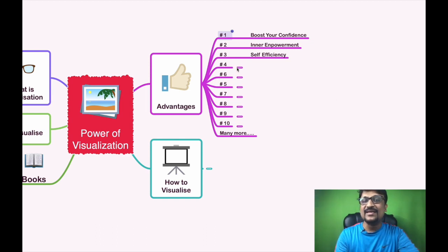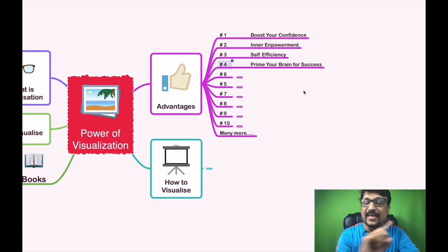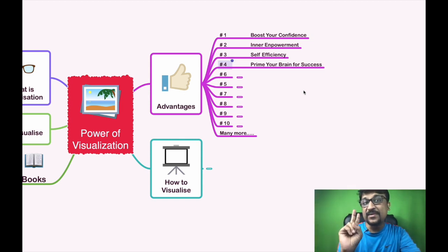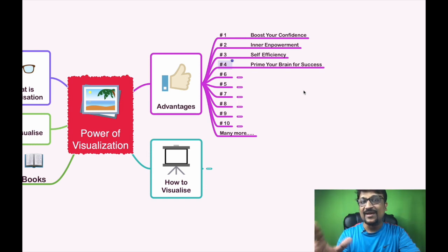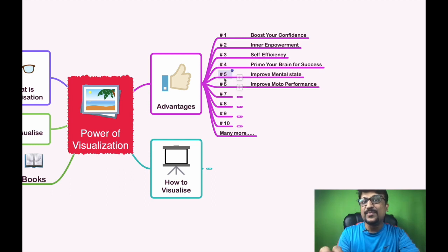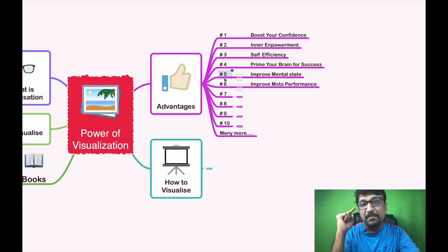The third point is self-efficacy — when you start visualizing, you automatically feel very strong and very active. The fourth point is how you can tune your brain for success. Anything in your personal or professional journey that you want to achieve happens in two ways: first within your mind, then in reality. That is why visualization is a key point — you have to see it first in your mind's eye, then take action to execute it, and finally you will see it in reality. Point number five is improving your mental state — in this busy, information-overloaded world, many people face stress and anxiety, and visualization will really help bring your mind into the right state.